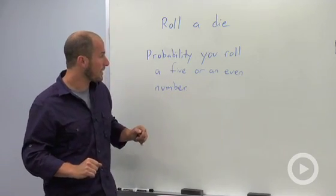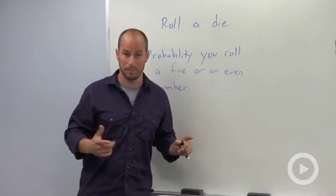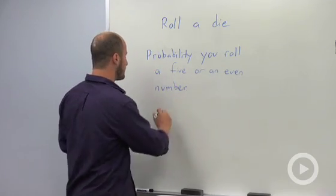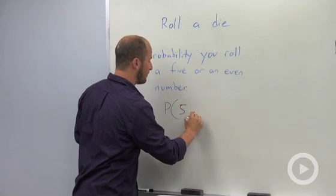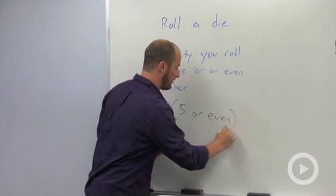For our first case what we're looking at is rolling a five or an even number. So what you will sometimes see is instead of written out as a sentence, just probability of a five or even.